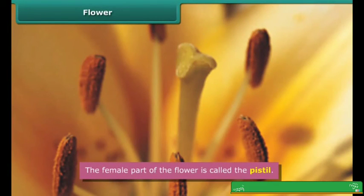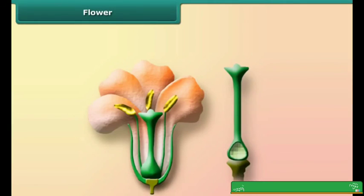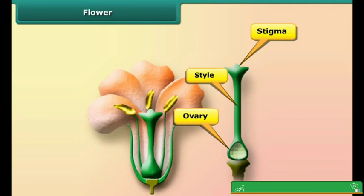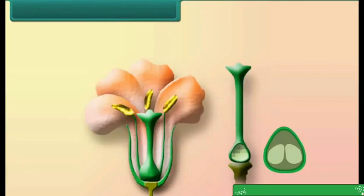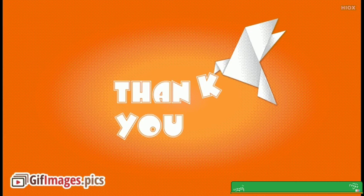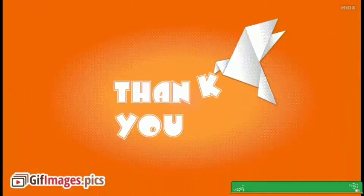The female part of the flower is called the pistil, which is the innermost part of a flower. It has three parts: first, the stigma — the upper part that receives pollen grains for fertilization; second, the style — a long hollow tube-like structure that joins the stigma and the ovary; and third, the ovary, in which ovules are produced. The mature ovary develops into fruit and the mature ovules develop into seeds. Children, read this chapter carefully. Next day we will discuss any doubts. Thank you.